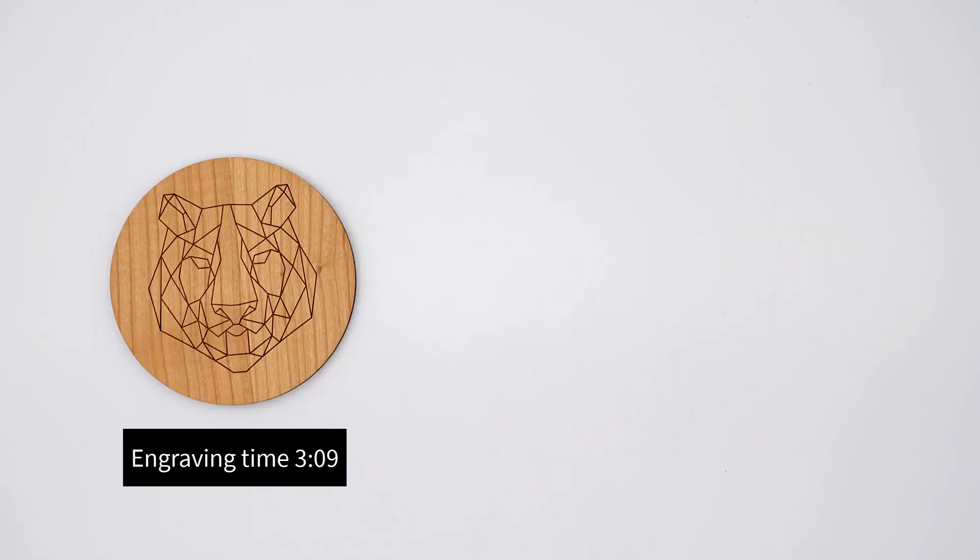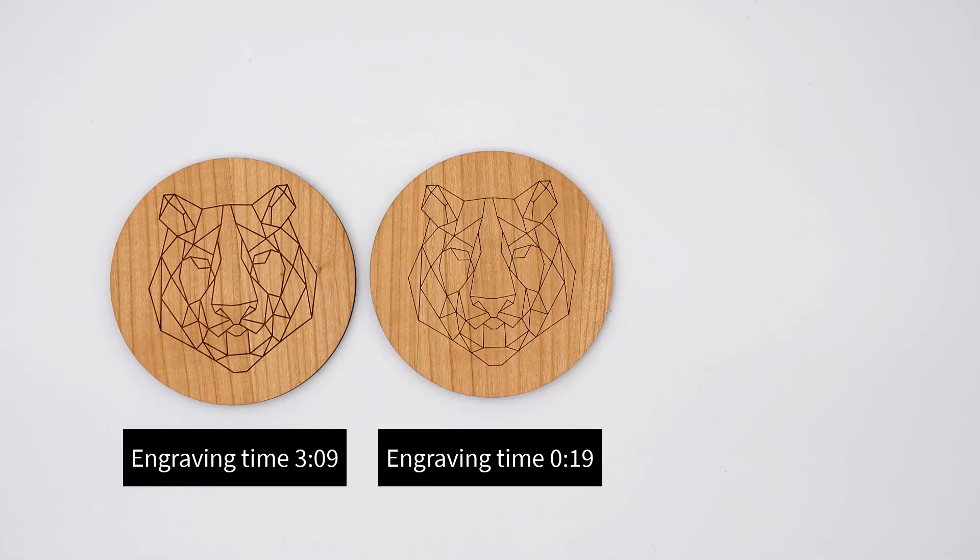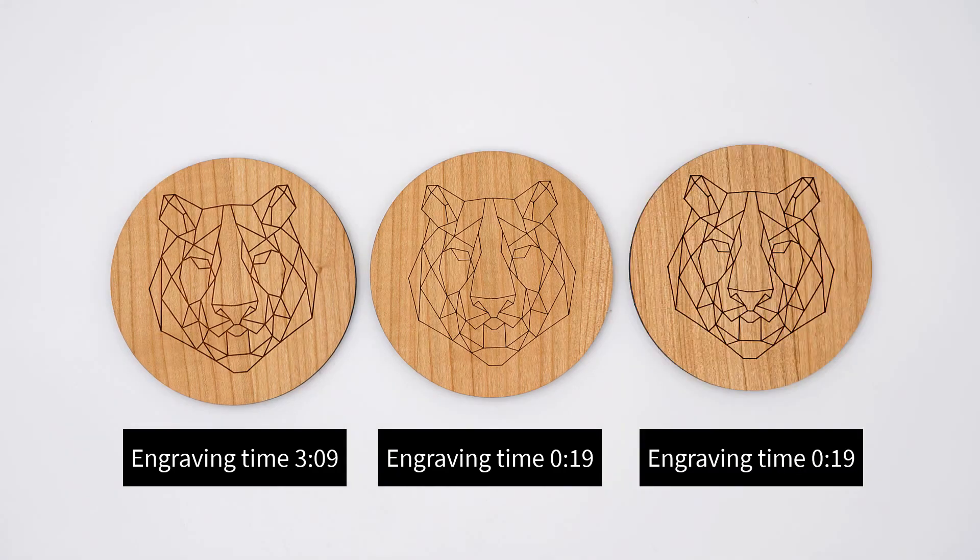Here are the three processes side by side. The raster engraving at 3 minutes and 9 seconds, the vector cut in focus at 19 seconds, and the vector cut out of focus also at 19 seconds but with the thicker lines.